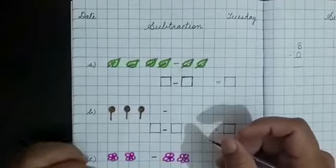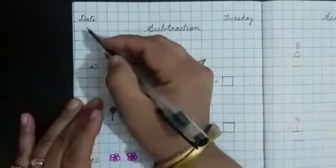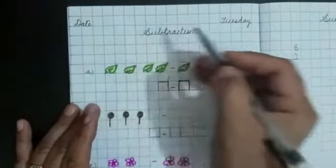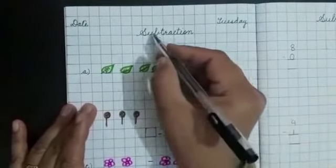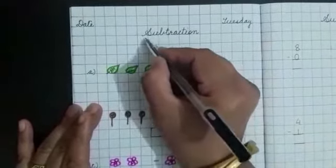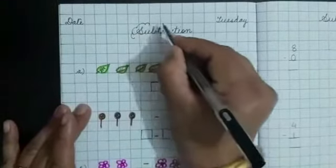Children, now it's turn to open your copies. You are well aware that you have to start your work with date. You have to write day and the topic itself. So what we are doing? Subtraction.